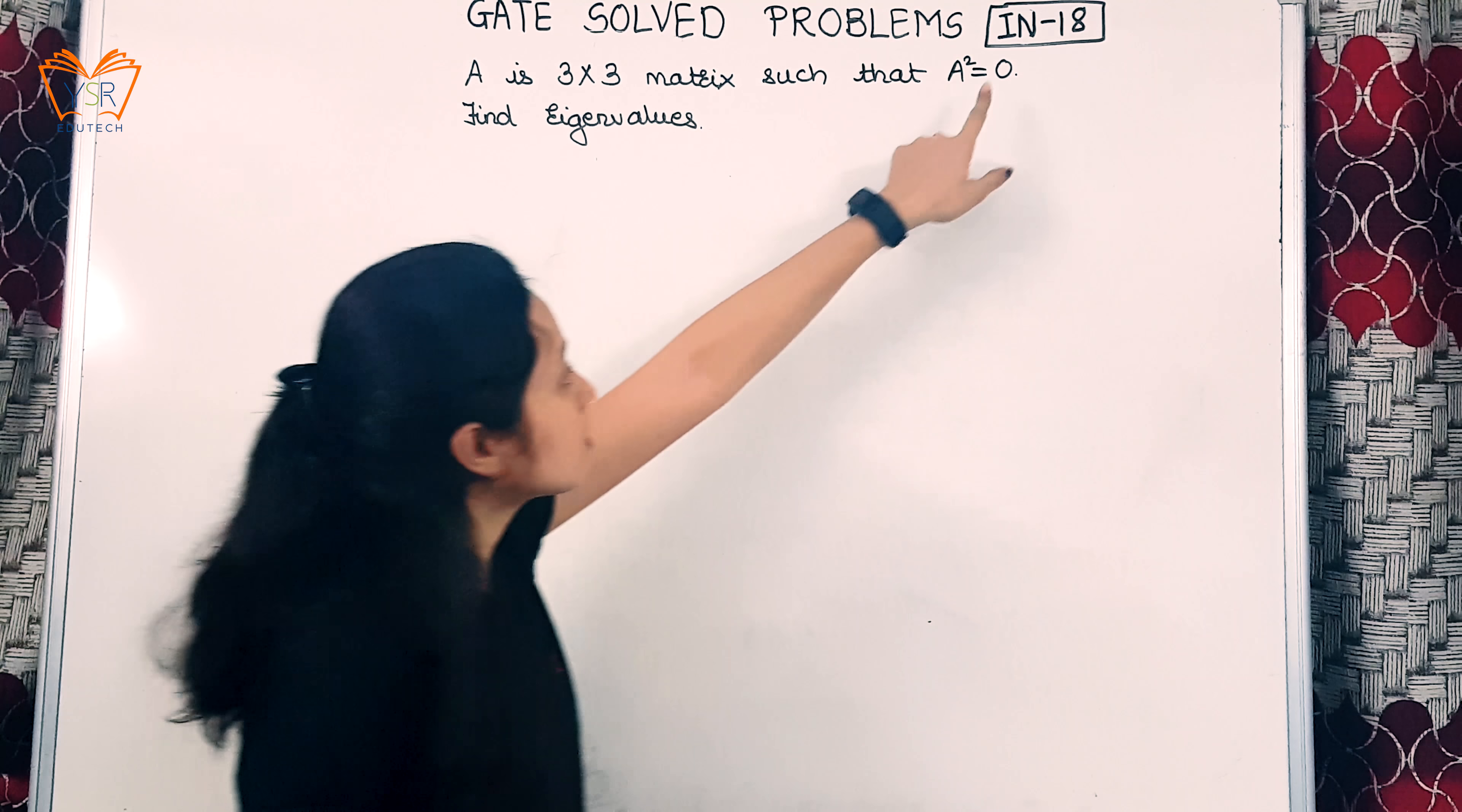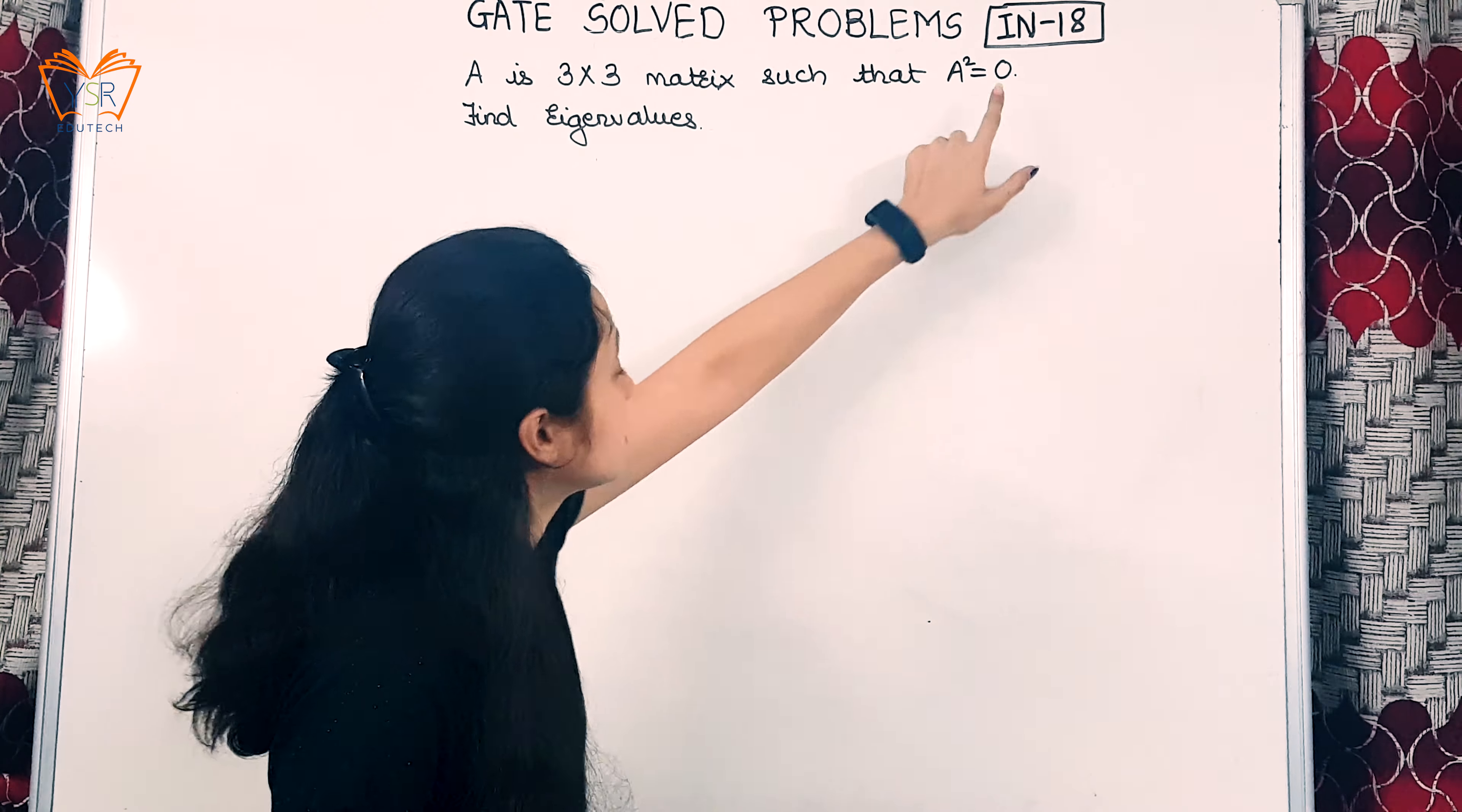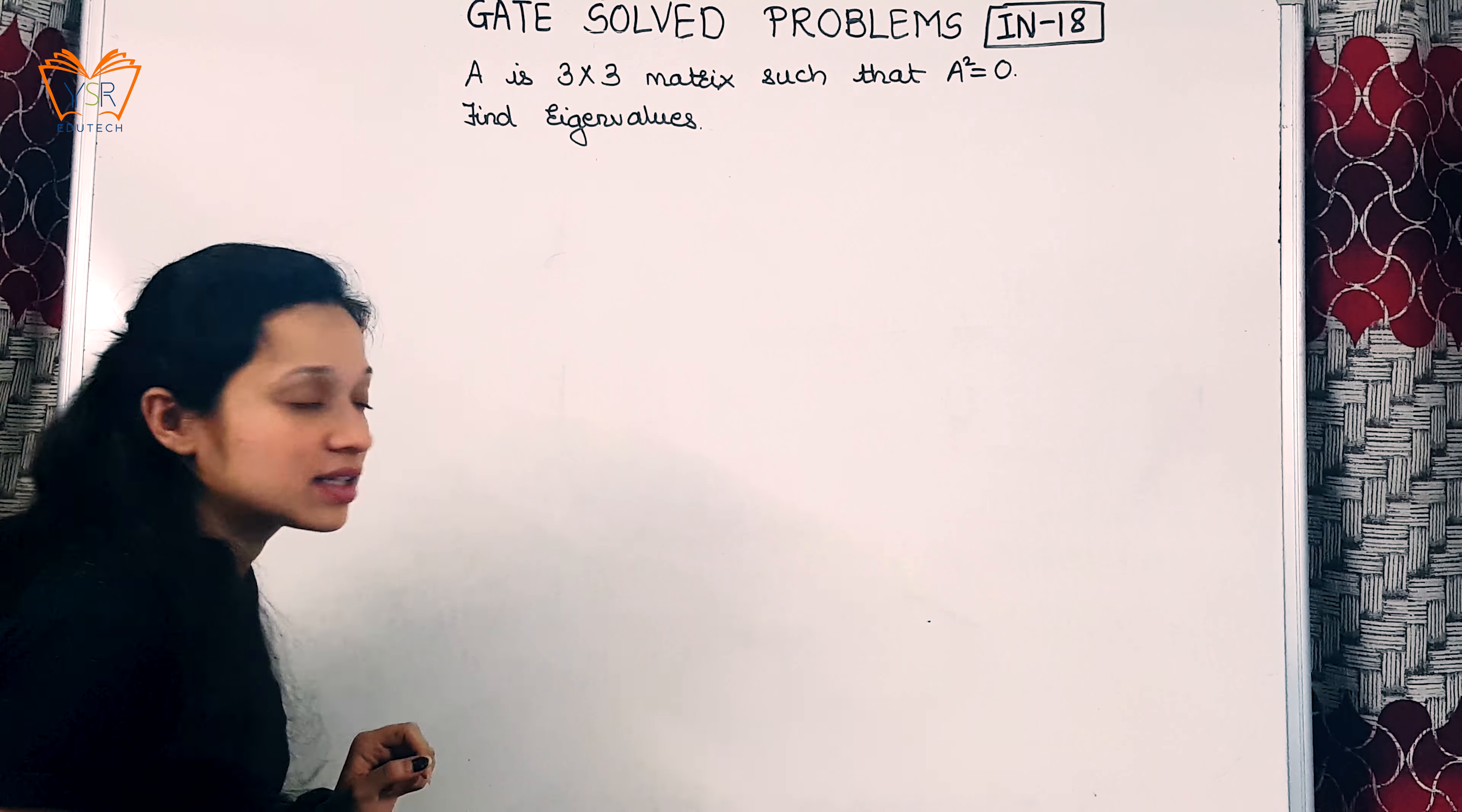Now this question was asked for instrumentation. The example is: A is a 3×3 matrix such that A² = 0. Find the eigenvalue.